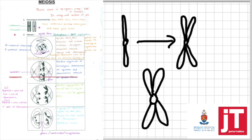Before meiosis 1, interphase takes place, during which DNA replication occurs. Then in prophase 1 — always say prophase 1 — spindle fibers form, the nucleolus and nuclear membrane disappear. The homologous chromosomes form: one maternal and one paternal. The chromosomes come to lie next to each other, and when they do, they are known as bivalents. They touch at the chiasma, and then the exchanging of genetic material takes place. This process is called crossing over, and its significance is genetic variation.